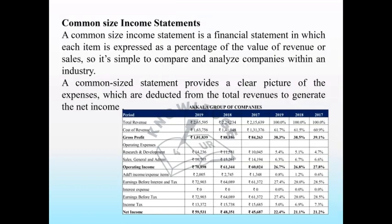A common size income statement is a financial statement in which each item is expressed as a percentage of the value of revenue or sales, so it is simple to compare and analyze companies within an industry. A common size income statement provides a clear picture of the expenses which are deducted from total revenue to generate net income.